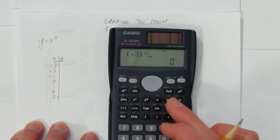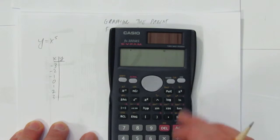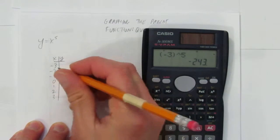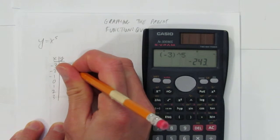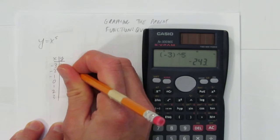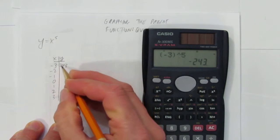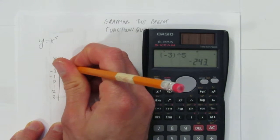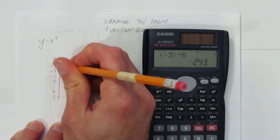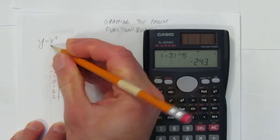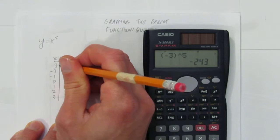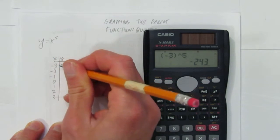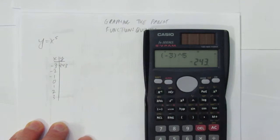Negative 3 to the power of 5: at negative 3, the parent quintic gives 243. Is it positive or negative? It's negative. Why? Because we have a negative value multiplied five times — that makes five negatives. Four will cancel out, but it stays negative.